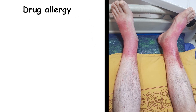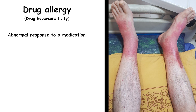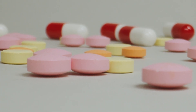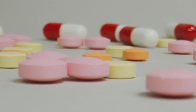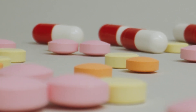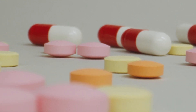Hello everyone. In this video we are going to be talking about drug allergy or drug hypersensitivity. Drug allergy is an abnormal immune response to a medication. It occurs when the immune system mistakenly identifies the drug as a harmful substance, or what we call an allergen, and produces antibodies against it.